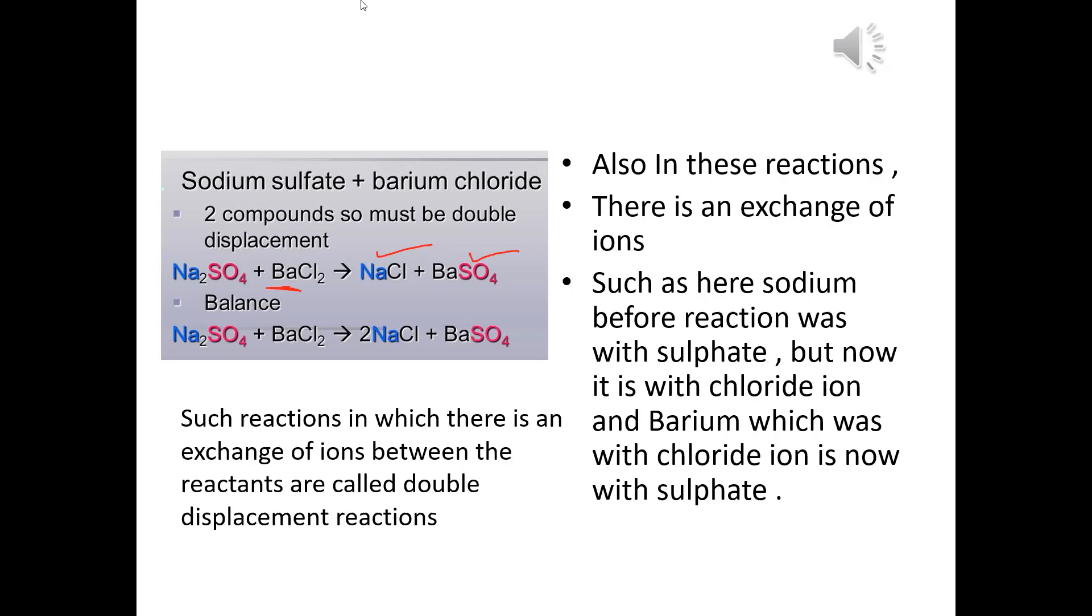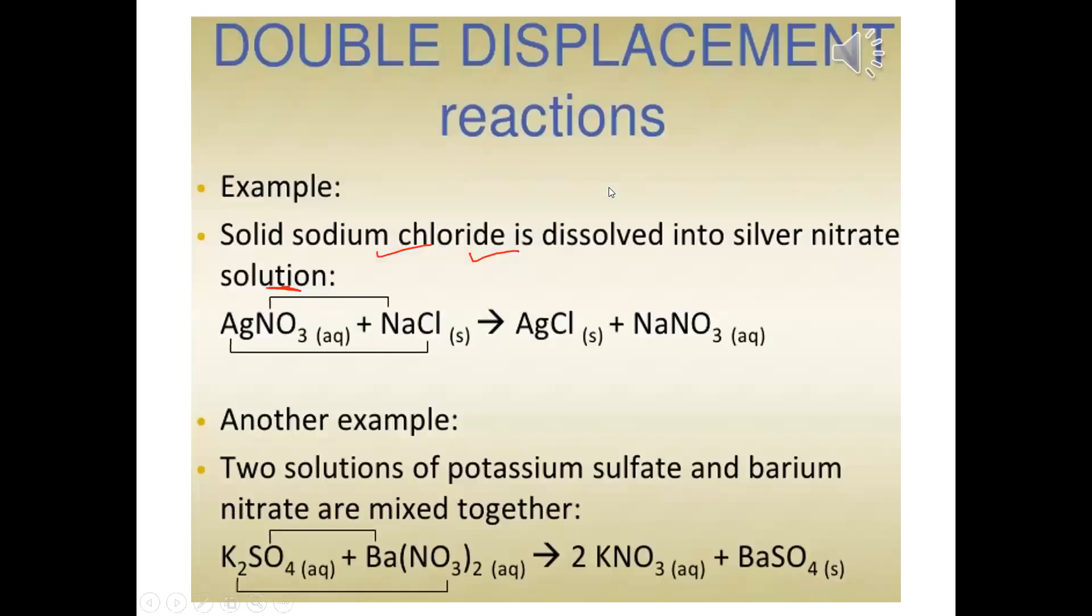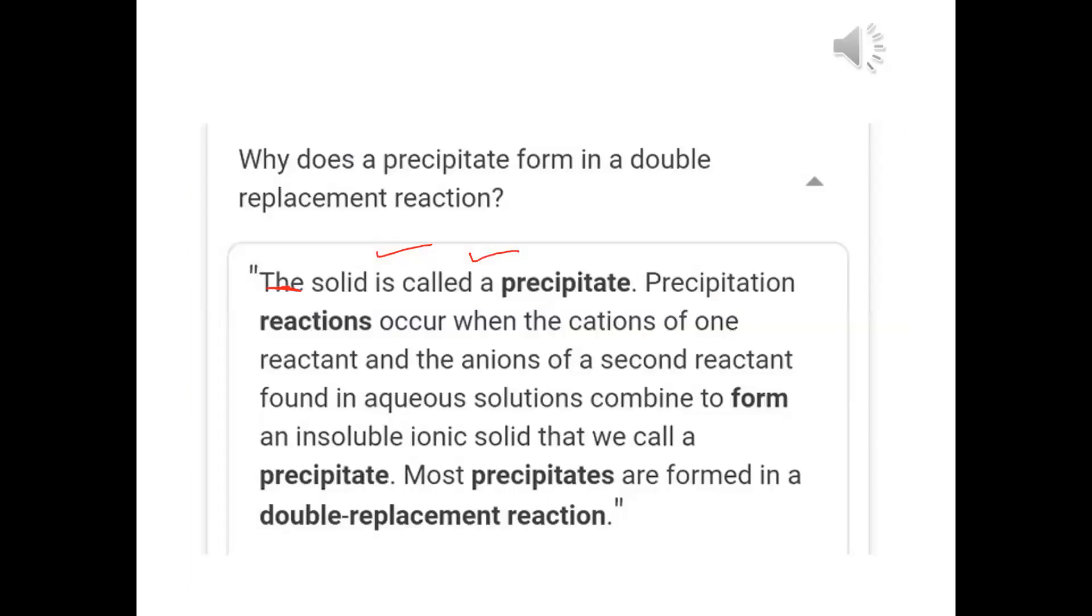I hope you have understood the four type of reactions. One was combination, decomposition, displacement and this is double displacement reaction. Here also, AgNO3 and NaCl, we get AgCl and NaNO3. Again, there is an exchange of ion between Na and Ag. Therefore, Ag plus and Na plus, so we call this as a double displacement reaction.